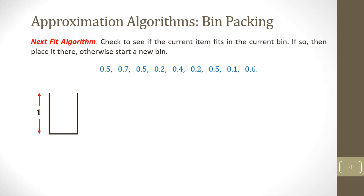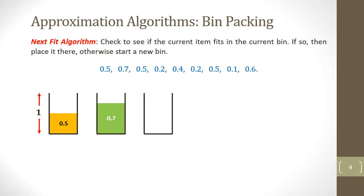The first item of size 0.5 will fit into the first bin. There is no more space in the first bin for the second item of 0.7, so we start a new bin and place 0.7 in it. Since there is no space in the second bin for 0.5, we start a new bin again and place 0.5 there. Since we have space in the third bin for 0.2, we add 0.2 to the third bin without creating a new bin.